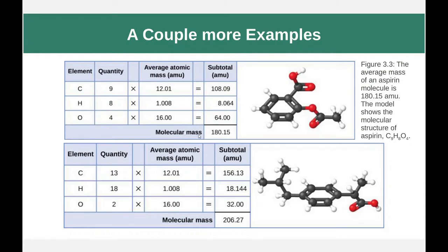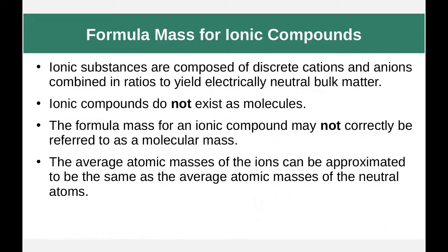It is important to note that the term molecular mass only applies to covalently bonded compounds, whereas formula mass is the exact same value but applies to both ionic and covalent compounds. Ionic substances are not discrete molecules — they are cations and anions combined in specific ratios to create a pattern, like a lattice structure, that makes up the bulk of material we see at a macroscopic level.